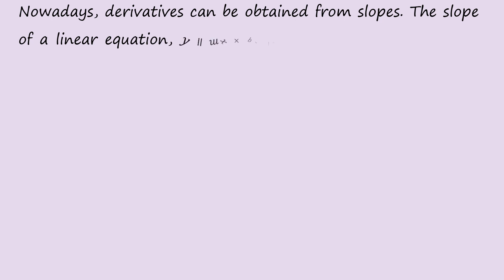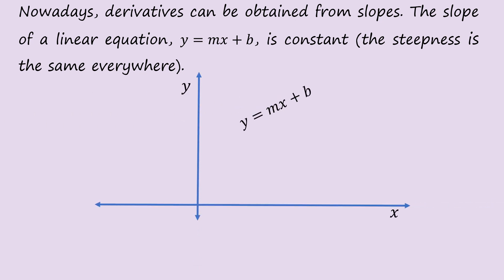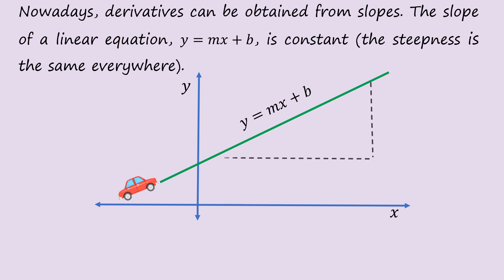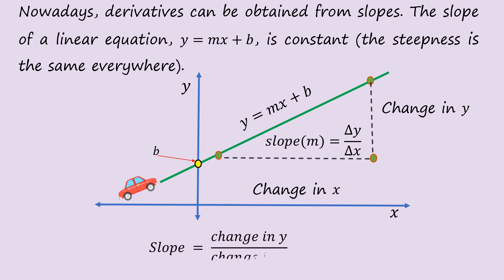Nowadays, derivatives can be obtained from slopes. The slope of a linear equation y = mx + b is standard — the steepness is the same everywhere. Let's consider the graph y = mx + b. We have a car that moves on a straight line; the difference in the values of x is called the change in x, and the difference between the values of y is the change in y. The slope is the change in y divided by the change in x.